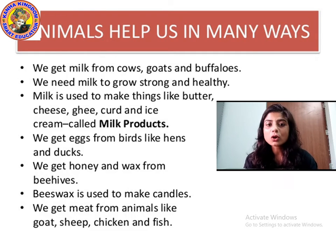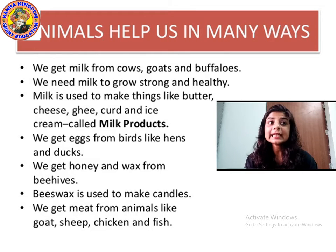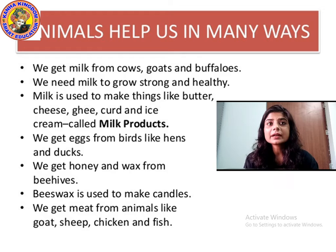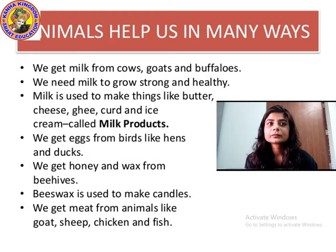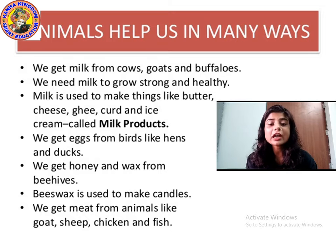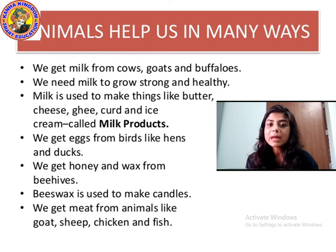From where do we get milk? We get milk from cow, goat, and buffaloes. Milk is used to make things like butter, cheese, ghee, curd, and ice cream. These are all milk products — all made from milk. Products that are made from milk are called milk products.